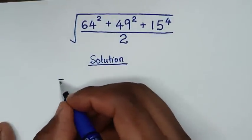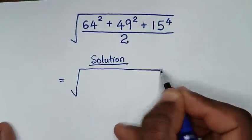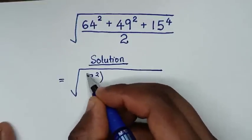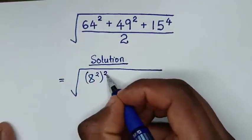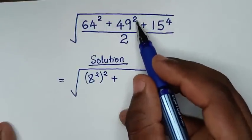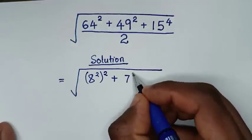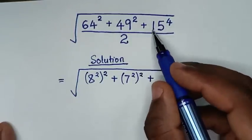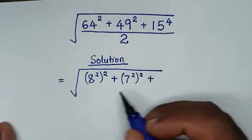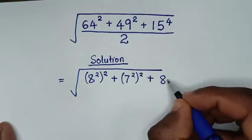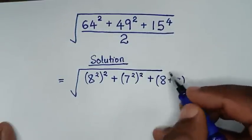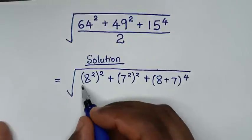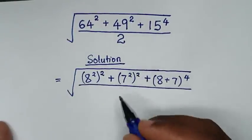The solution: it will be equal to the square root of — 64 is the same as 8 squared, so we write (8²)². Then plus 49 squared, where 49 is the same as 7 squared, so we write (7²)². Then plus 15, which has the common factors 8 and 7, so 15 is the same as 8 plus 7, and we write (8+7) to the power of 4, all over 2.